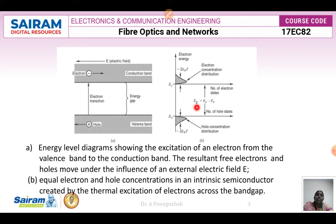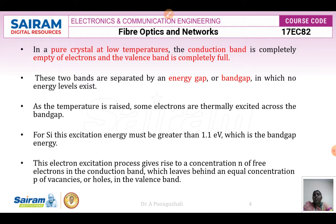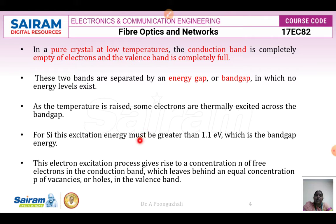In a pure crystal at low temperature, the conduction band is completely empty of electrons and the valence band is completely full of electrons. The two bands are separated by an energy gap or band gap where there is no energy level. As we raise the temperature, some electrons get excited from the valence band to the conduction band, causing the band gap energy.